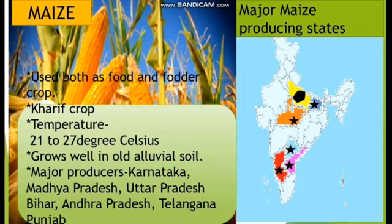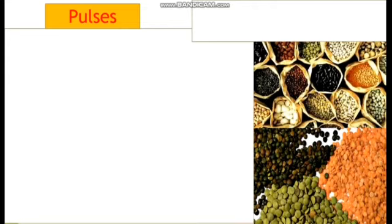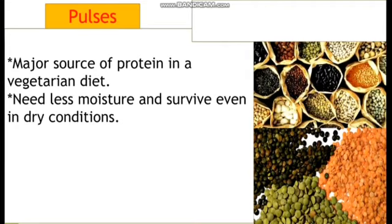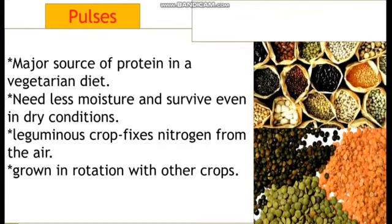Pulses are different types of dal. India is the largest producer and consumer of pulses in the world. They are a major source of protein in a vegetarian diet. They require less moisture and survive even in dry conditions — growing with as little as 50 to 70 centimeters of rainfall. Pulses are leguminous crops, meaning they can fix nitrogen from the air. Therefore they are mostly grown in rotation with other crops — for example, after cotton which depletes nitrogen, pulses are grown to restore soil fertility.